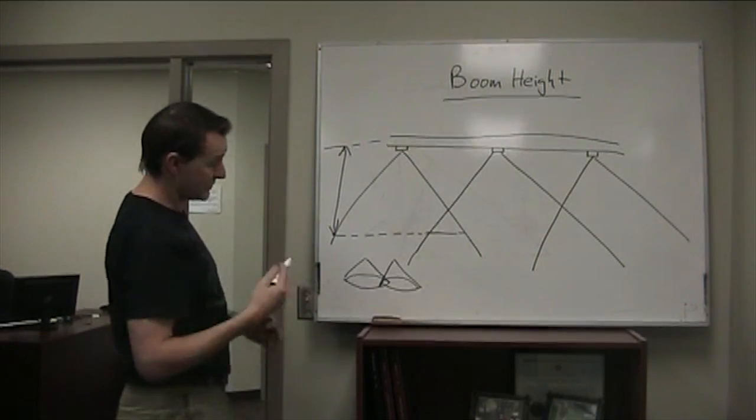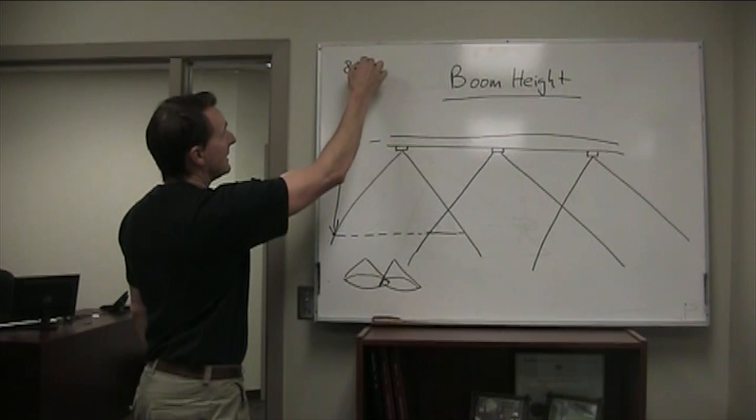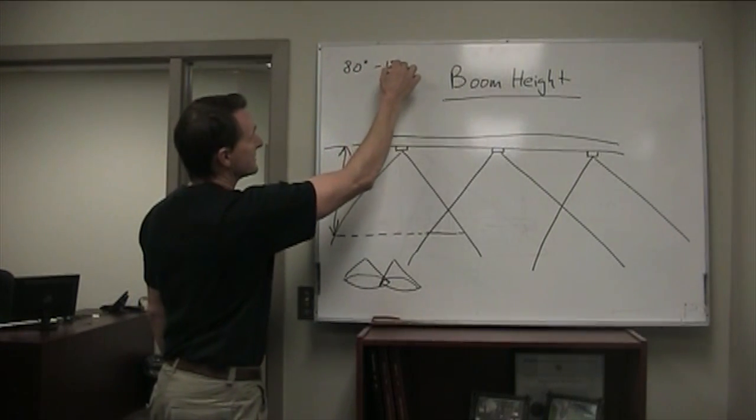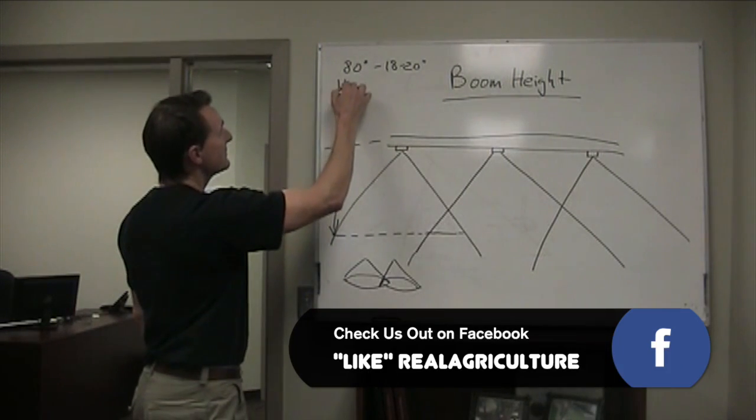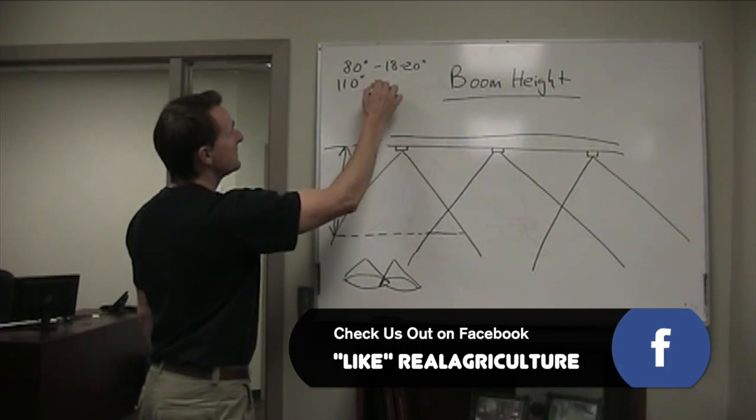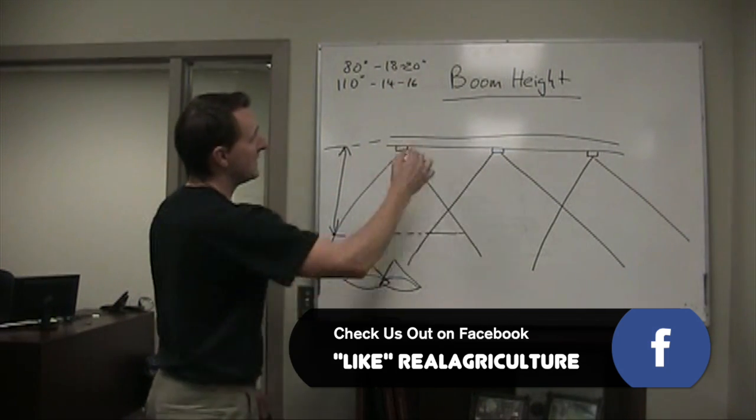For the traditional nozzles we talked about a minute ago, for an 80 degree nozzle that's usually 18 to 20 inches boom height for 30% overlap. For a 110 degree nozzle we typically have been going to 14 to 16 inches for that 30% overlap.